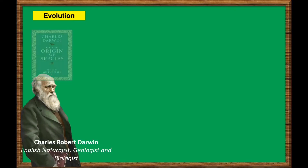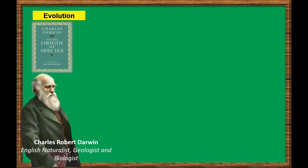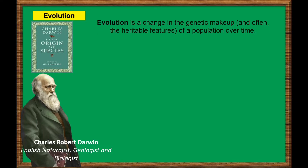The evidence for evolution is compelling and extensive. Darwin dedicated a large portion of his book On the Origin of Species to identifying patterns in nature that were consistent with evolution. Evolution is a change in the genetic makeup and often the heritable features of a population over time.